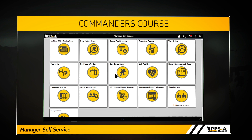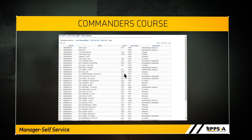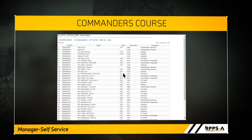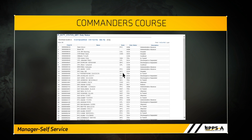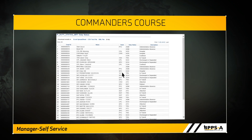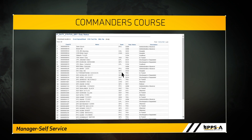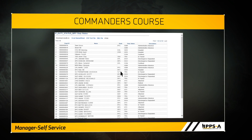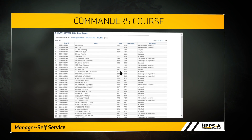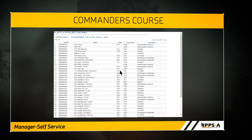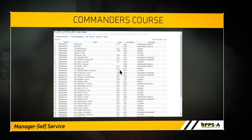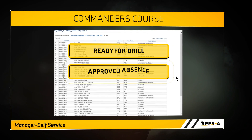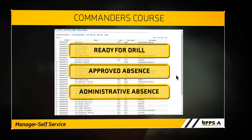The Duty Status Query tile displays as a downloadable spreadsheet of your soldier's duty status. You can see the current duty status along with predefined statuses such as Ready for Drill, Approved Absence, and Administrative Absence. The system displays the following duty statuses for Army National Guard members: Ready for Drill, Approved Absence, and Administrative Absence.